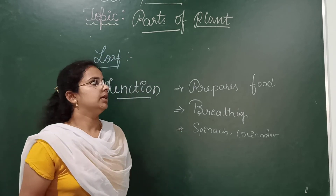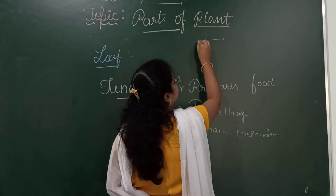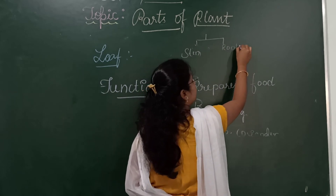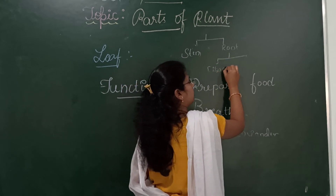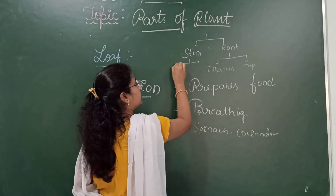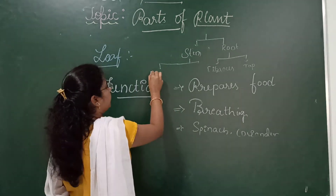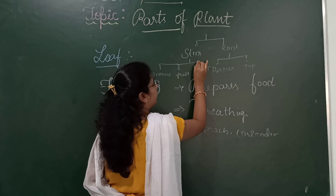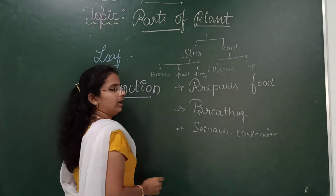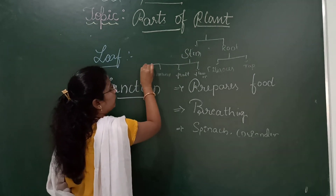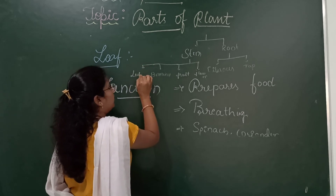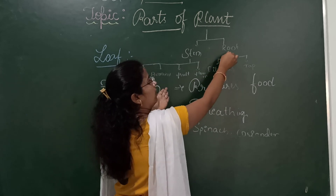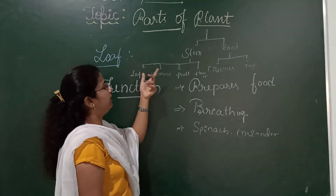Until now, we have completed the parts of the leaf. The parts of the plant contain two things: stem and root. Root is of two types — fibrous root and tap root. Stem consists of divisions like branches, fruits, flowers, and leaf. These are all the things from which we started our lesson.